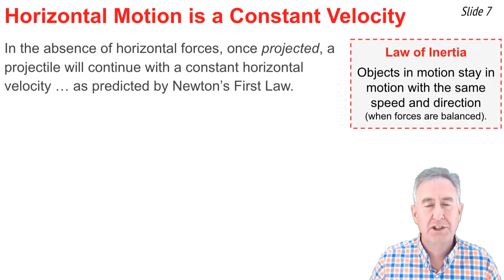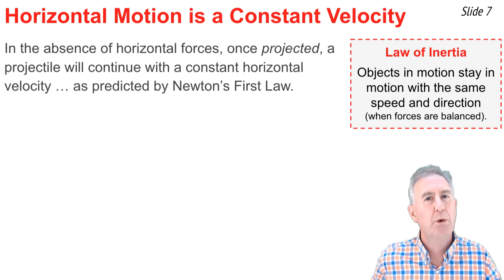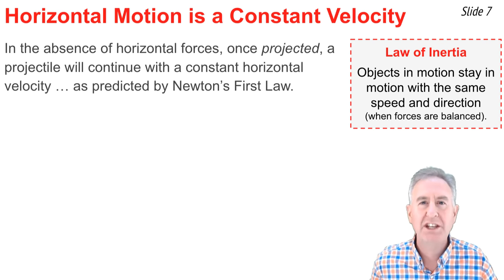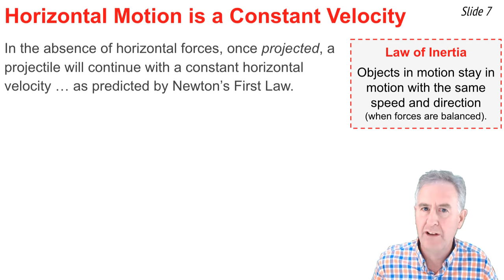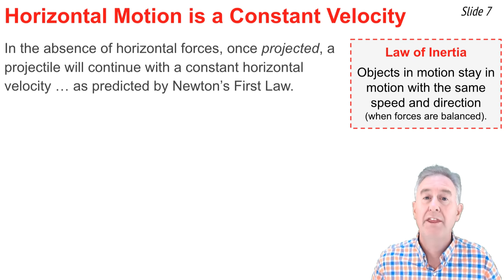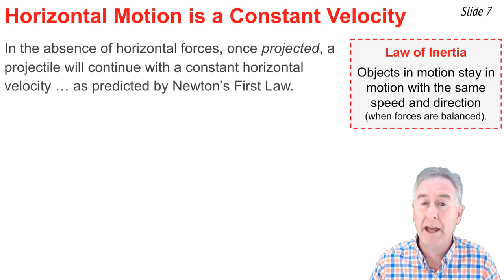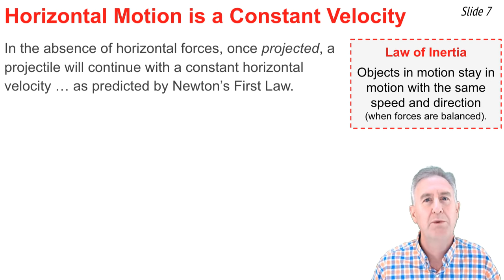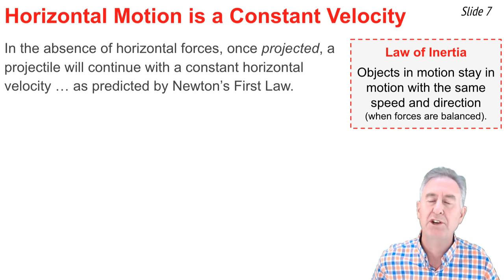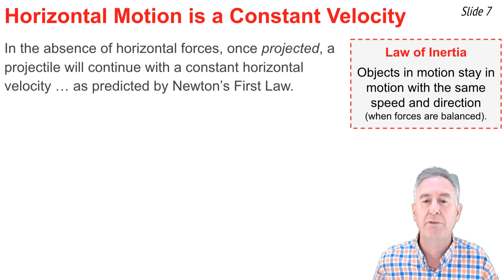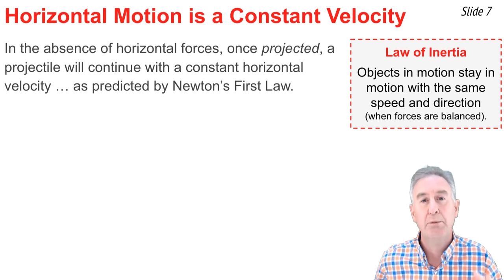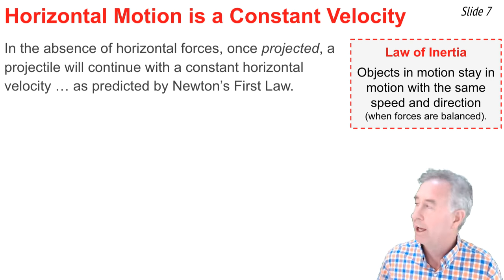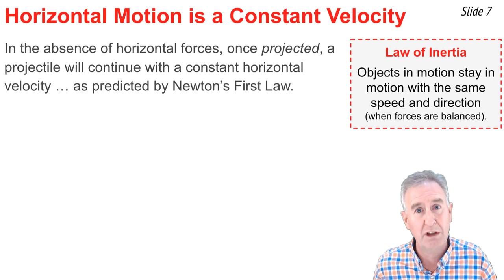Gravity causes this vertical acceleration, but what causes the horizontal motion? That's easily explained by Newton's first law of motion — the law of inertia — which states that if there are no unbalanced forces, an object in motion stays in motion with the same speed in the same direction. In the absence of horizontal forces, once projected, a projectile will continue to move with a constant horizontal velocity, as predicted by Newton's first law.